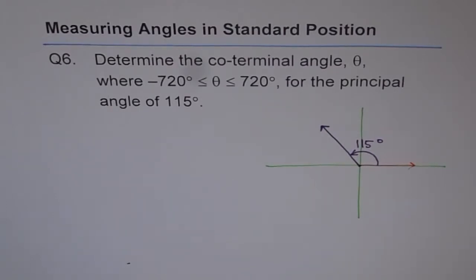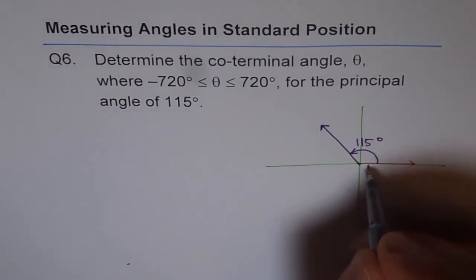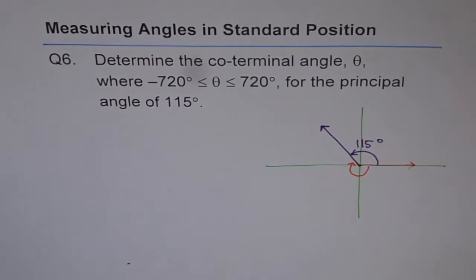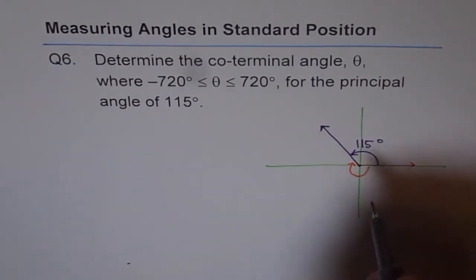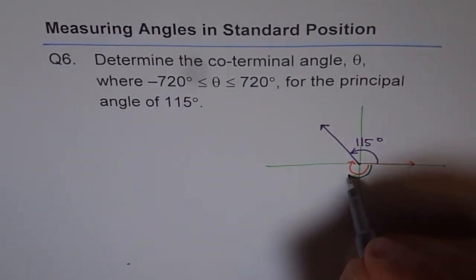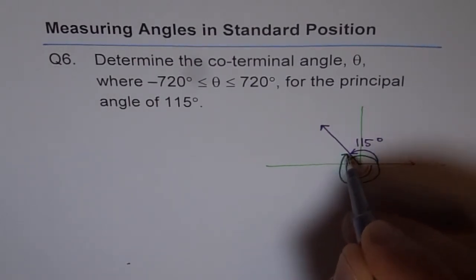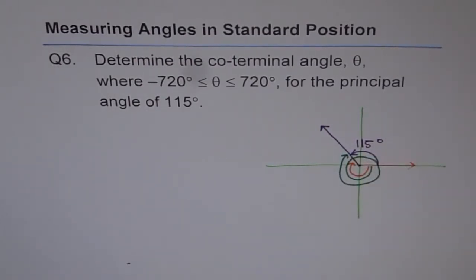Now what we are supposed to find here is the co-terminal angles within a domain of minus 720 to plus 720 degrees. Minus 720 means we will be measuring the angle in the negative direction, so that could be one answer. The other answer could be going around one more full circle, giving us another co-terminal angle.